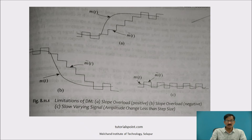The second type is granular noise. When there is a small variation in the analog signal, the staircase output oscillates around the analog input, alternating between plus delta and minus delta — alternatively between positive and negative values.